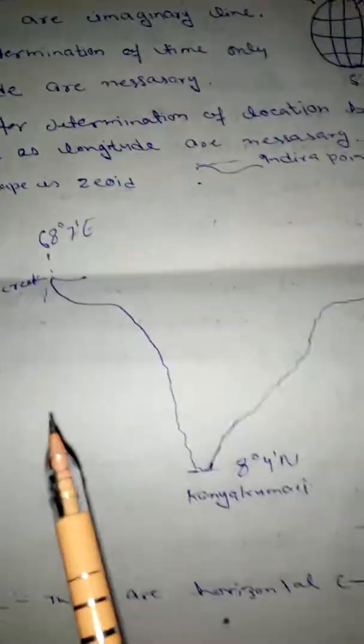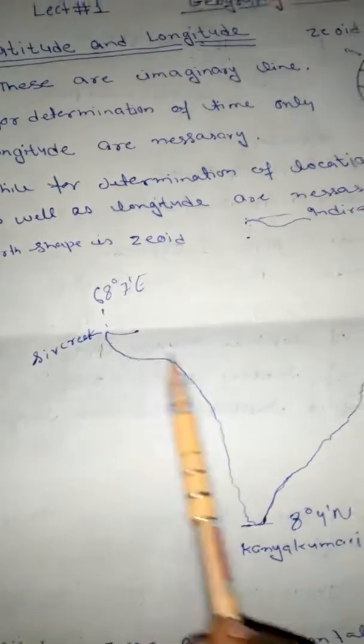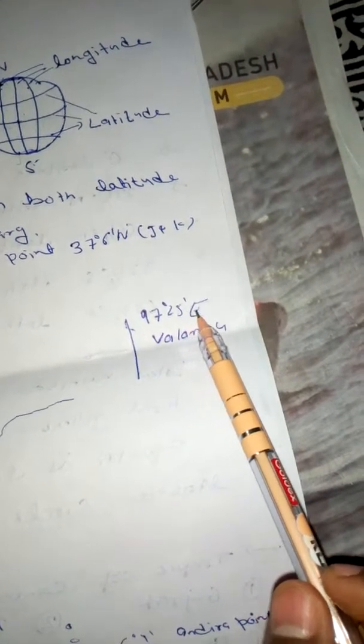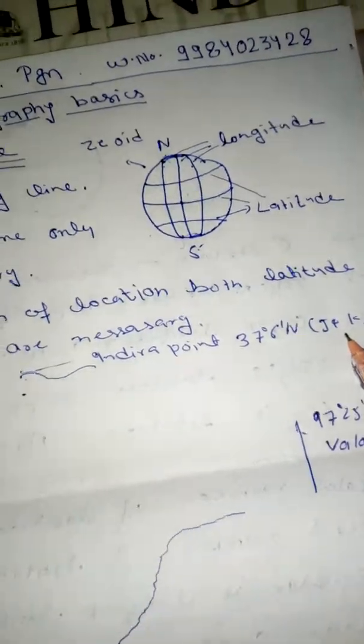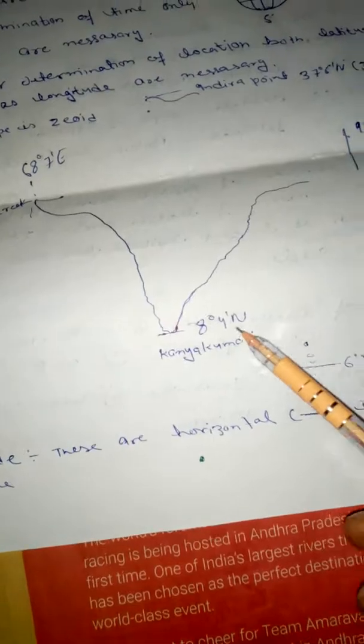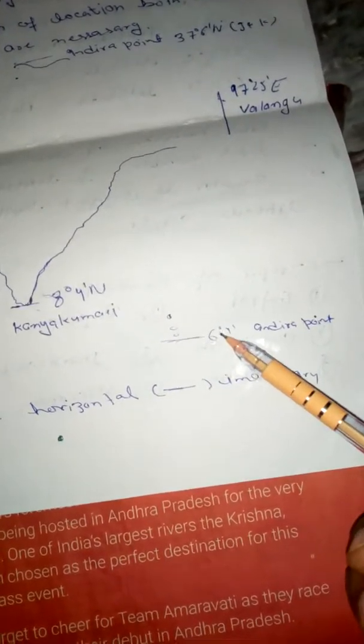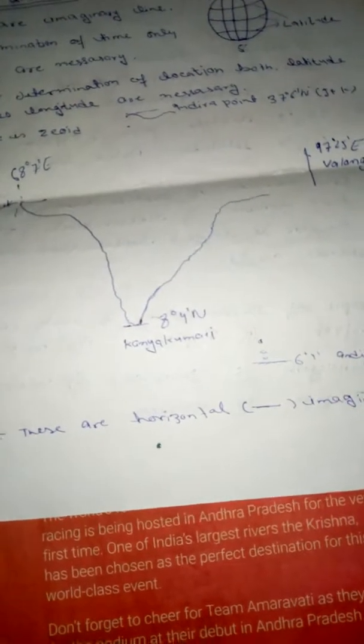If you consider India maps, then this is 68 degrees 7 minutes at Gujarat and here in Arunachal Pradesh 97 degrees 25 minutes. In here is the Indira Point at 37 degrees 6 minutes in Jammu and Kashmir and 8 degrees at Kanyakumari, the ending point of total mainland. If you come in Andaman and Nicobar then here is the Indira Point, so 6 degrees 4 minutes is proper India land.